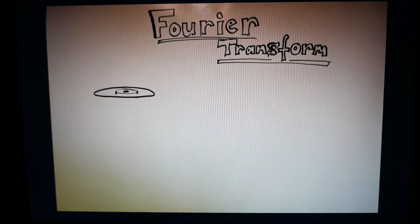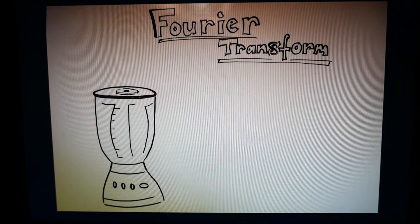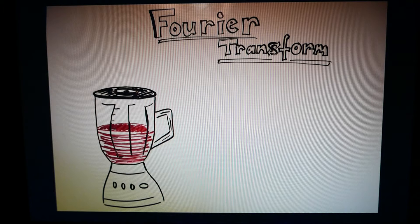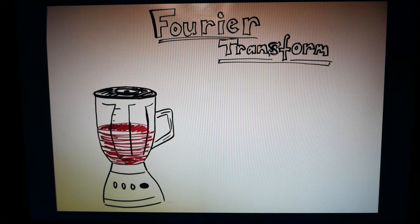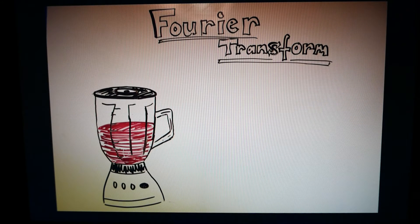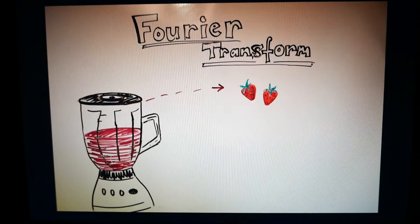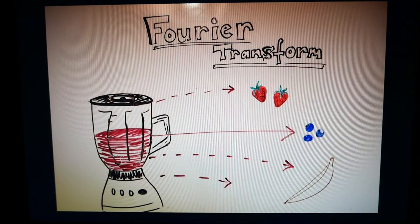Abstractly, imagine that the original function is a smoothie. The smoothie itself is composed of multiple ingredients: strawberries, blueberries, banana ice, and whatever else you like. If you blend the ingredients together, you get a smoothie, or a function. If you filter out the smoothie, you can find its individual ingredients, the ingredients being sinusoidal functions.